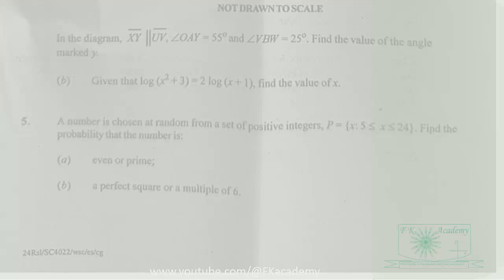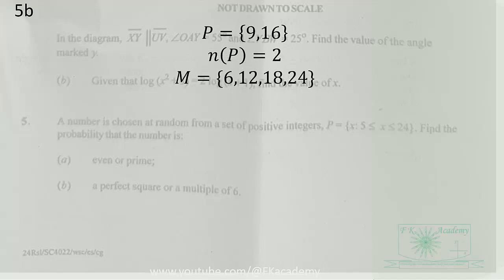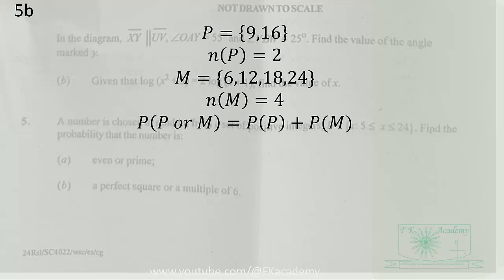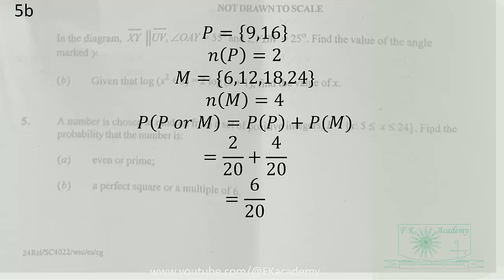We also find the probability that the number is a perfect square or a multiple of 6. The perfect squares in the set are 9 and 16 — 2 elements. The multiples of 6 are 4 elements. P(perfect square or multiple of 6) = 2/20 + 4/20 = 6/20 = 3/10.